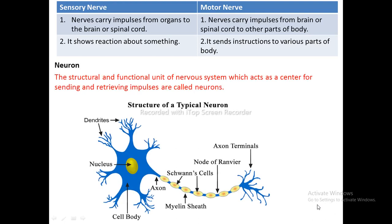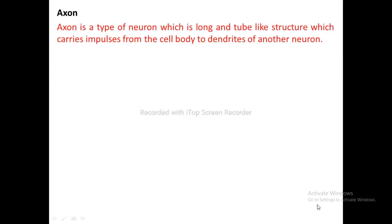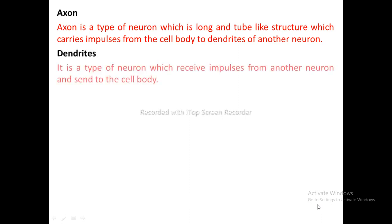Neuron: The structural and functional unit of the nervous system, which acts as a center for sending and receiving impulses, is called a neuron. Axon: A long, tube-like structure which carries impulses from the cell body to the dendrites of another neuron. Dendrites: A type of neuron extension which receives impulses from another neuron and sends them to the cell body.